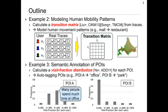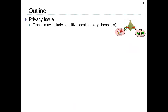The third example is a visit fraction distribution. For each POI, we can calculate a frequency distribution of the visit fraction, and this distribution can be used for annotation of POIs. For example, in this figure, POI-A is an office and POI-B is a park. Many people spend much time at the office — for example, they may spend 20% to 60% of their time there — so we can automatically add an office tag to POI-A based on this distribution. However, traces may include some sensitive locations such as hospitals and home.